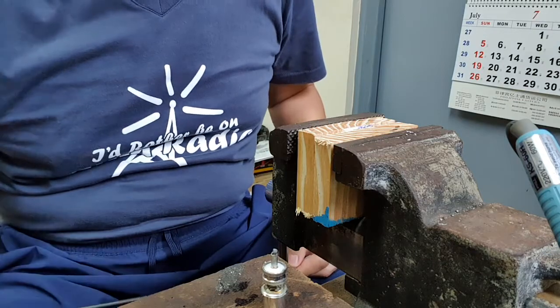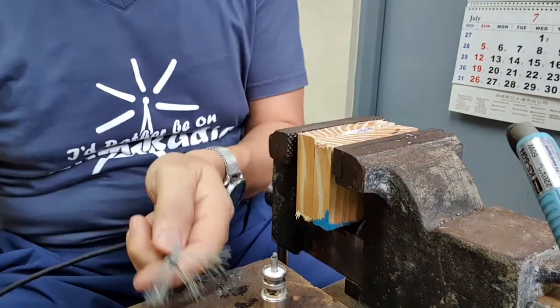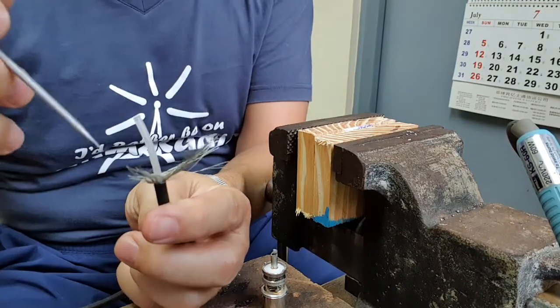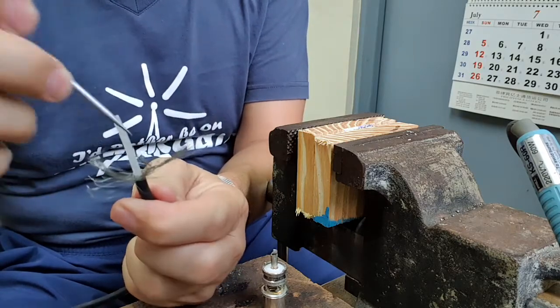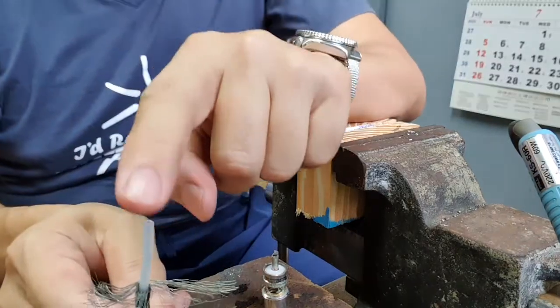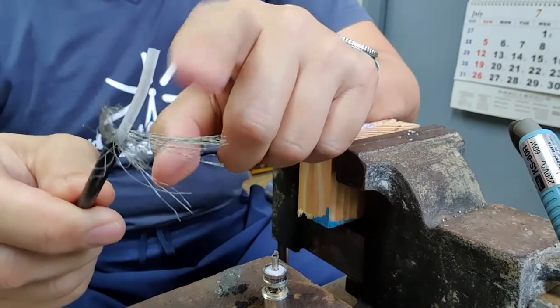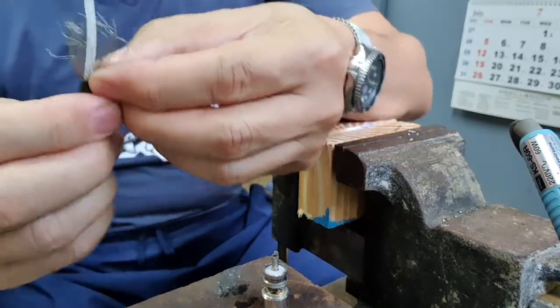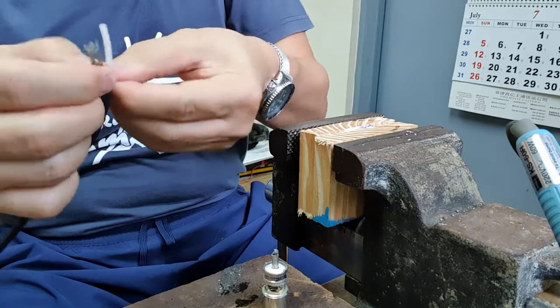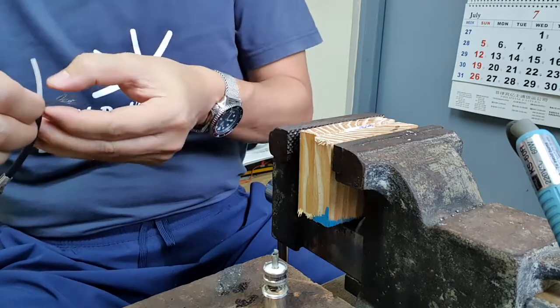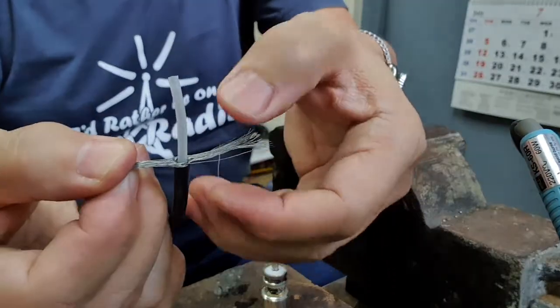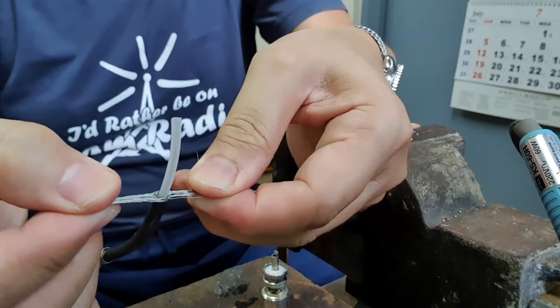After that I splice my coax and then I separate the braid like so by using this like a pick, so I just do this and separate the braid from the center conductor. I separate it into two like a bunch. And then I'm going to snip this off.